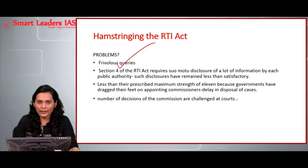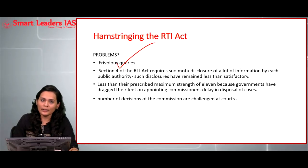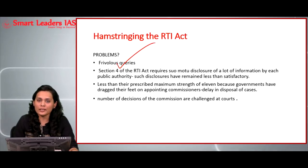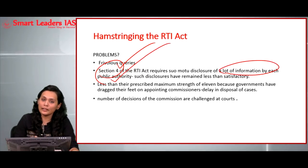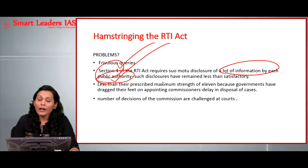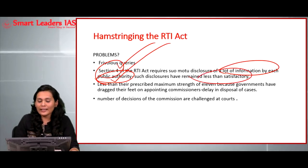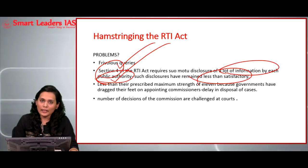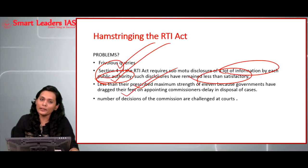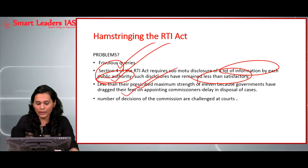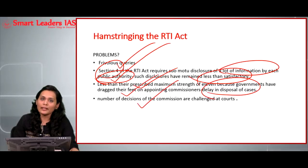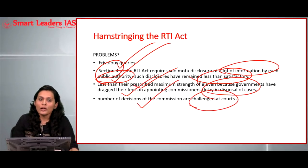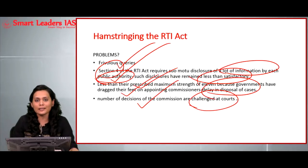Section 4 of the RTI Act requires suo motu disclosure of a lot of information by public authorities. However, what constitutes a public authority is a key question, and disclosures made by public authorities have remained less than satisfactory in most cases. Both the central and state information commissions have less than the prescribed maximum strength of 11 commissioners because the government has dragged its feet in appointing information commissioners at both state and central levels. This has resulted in delays in disposal of cases, and many decisions taken by information commissions are challenged at various high courts, increasing the burden on the judiciary.